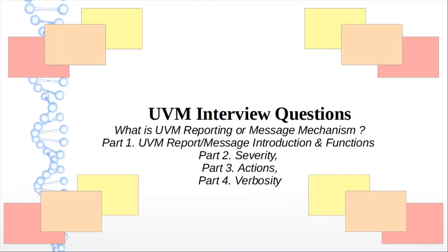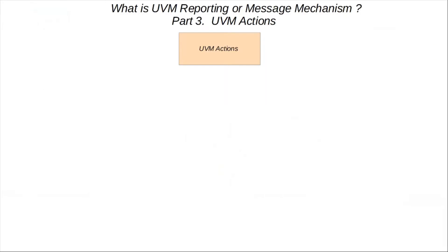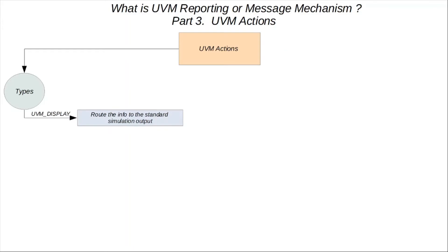Hi everyone, today we'll be going over Part 3 of the UVM reporting messaging mechanism. Part 3 is going to be UVM reporting actions. The first action type is UVM_DISPLAY, which is mostly used to send messages to the default simulation log output file. UVM_STOP, on the other hand, when a message with this action is encountered, the simulator will hold the simulation and move it to an interactive debug mode.